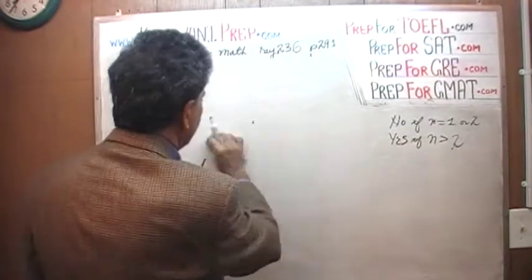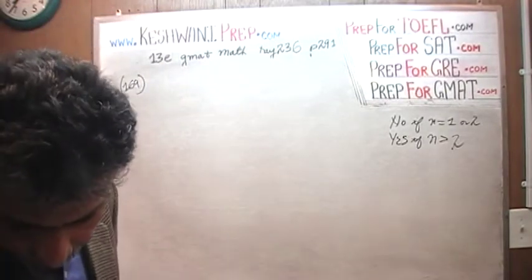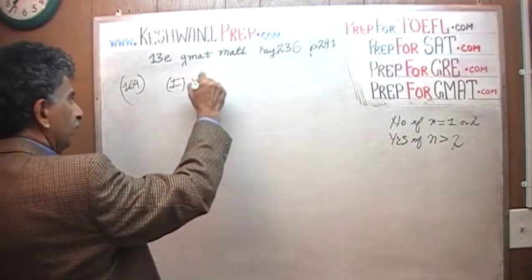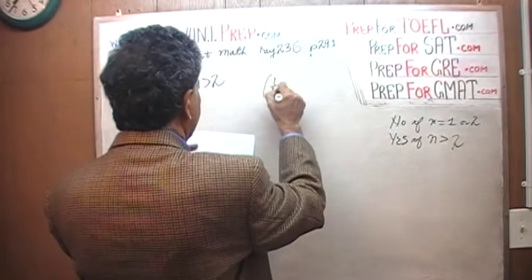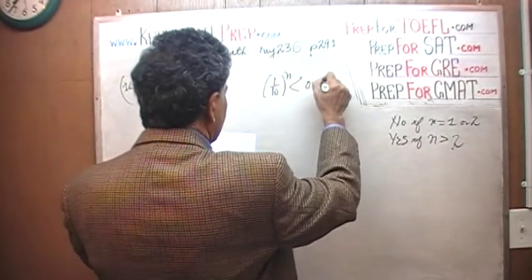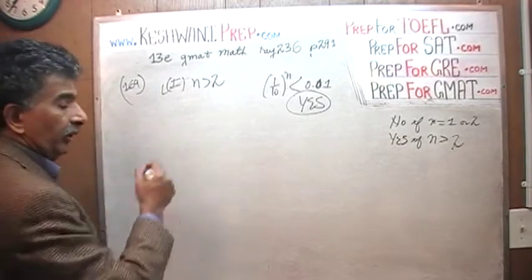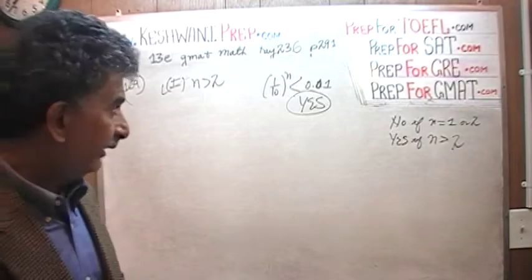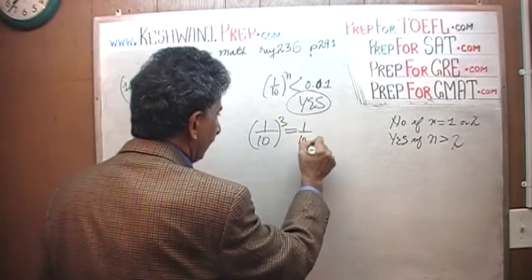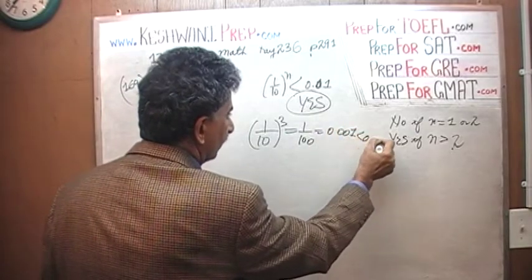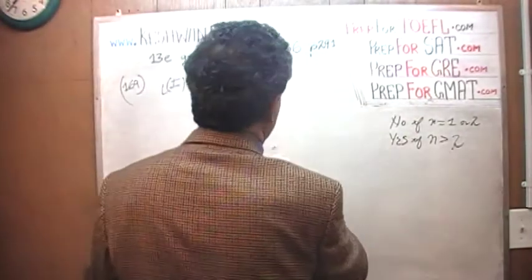It is very important that we understand first what is being asked in its simplest form — all we want to know is if n is more than 2. In the first statement, they actually tell you that n is more than 2. So the question — is 1 over 10 raised to n less than 0.01 — the answer is definitively yes. If n is more than 2, this quantity has to be less than 0.01. Because if n is 3, it is 1 over 1000, which is 0.001, less than 0.01; if n is 4 it is even smaller. So the first statement by itself is sufficient.